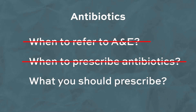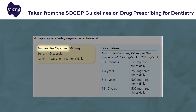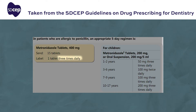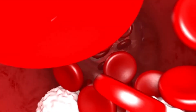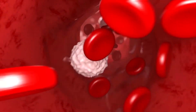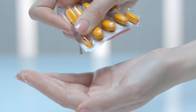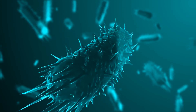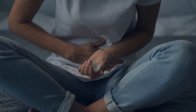The first-line antibiotic for acute, chronic, or periodontal abscesses is amoxicillin — 500mg taken three times a day for five days. If the patient has a penicillin allergy, the second-line antibiotic is metronidazole, 400mg three times a day for five days. In very rare cases where a patient is allergic to penicillin and also takes warfarin — a contraindication for metronidazole — you should speak to a specialist before prescribing clindamycin or clarithromycin, as these contribute to antimicrobial resistance and could cause bowel infections.